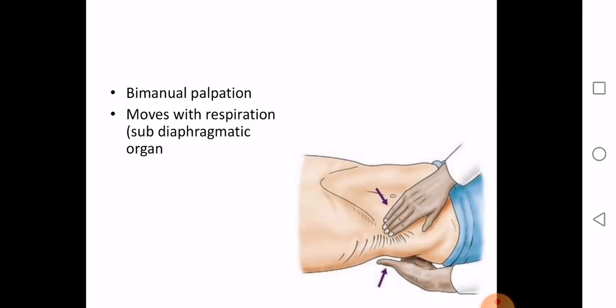You can palpate an abnormal kidney. The kidneys can be palpated by a method called bimanual palpation. As the name suggests, it uses both hands. The clinician places one hand below and one hand above in a supine patient. You first ask the patient to lie down, then place one hand below on the posterior aspect in the region of the loin. The loin is the region of the back extending between the inferior margin of the ribcage and the iliac crest.